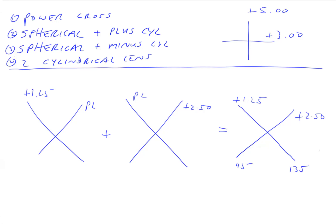Then what do we have? This is the 45 degree meridian, this is 135 degree meridian. So this one is plus 1.25 axis 45 because the plano is along the 45 degree meridian. This one is plus 2.50 axis 135. So this is another way that we can write this toric system.